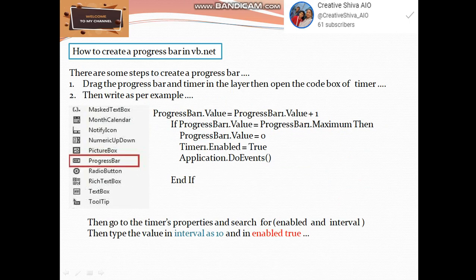How to create a progress bar in vb.net. There are some steps to create a progress bar. First one drag the progress bar and timer in the layer. Then open the code box of timer. Then write as per example. For example progress bar 1 dot value equals to progress bar 1 dot value plus 1.